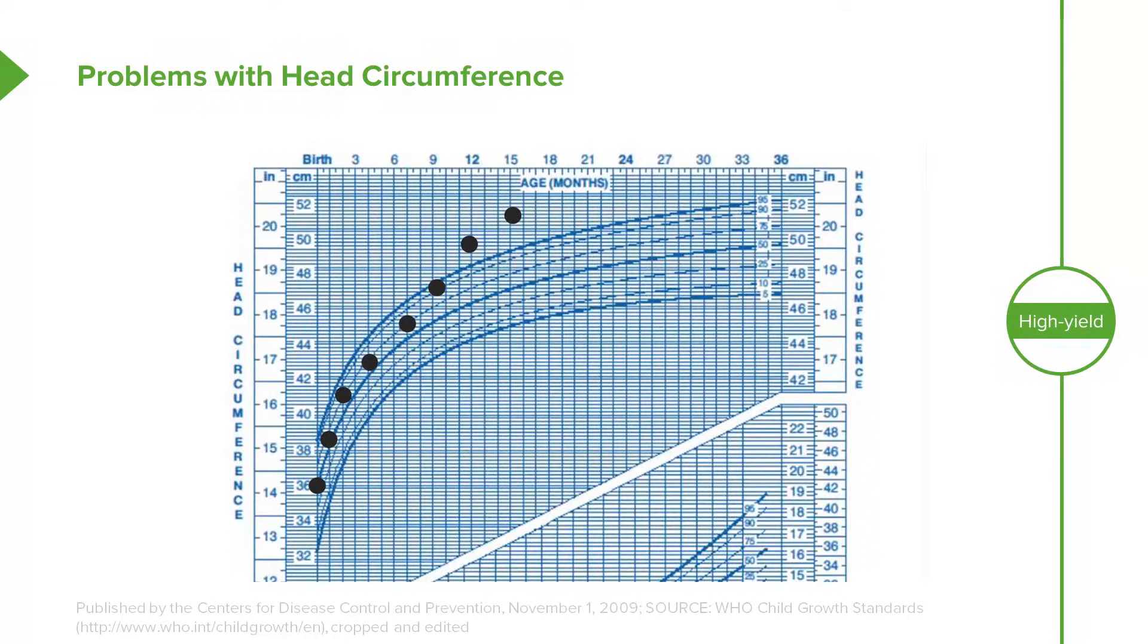In this child, they were doing very well in terms of appropriately growing head circumference until about the age of 9 months when the head circumference really started expanding.